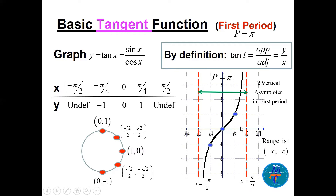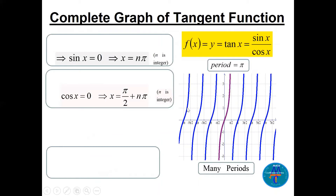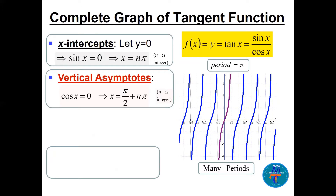The range of the tangent function is all real numbers. This is the complete graph of the tangent function. In the previous slide we had only the first period, from minus pi over 2 to pi over 2. Then from pi over 2 to 3 pi over 2 is another period, from 3 pi over 2 to 5 pi over 2 is another, and the pattern continues to infinity — many periods.